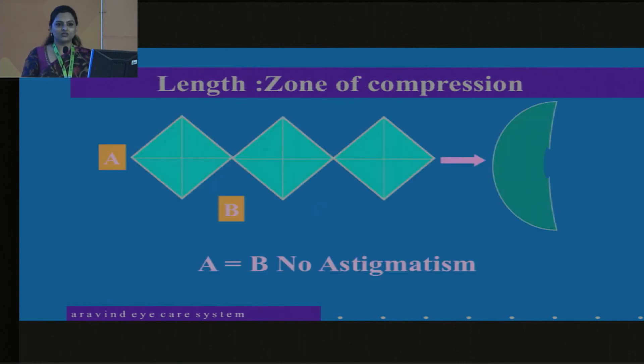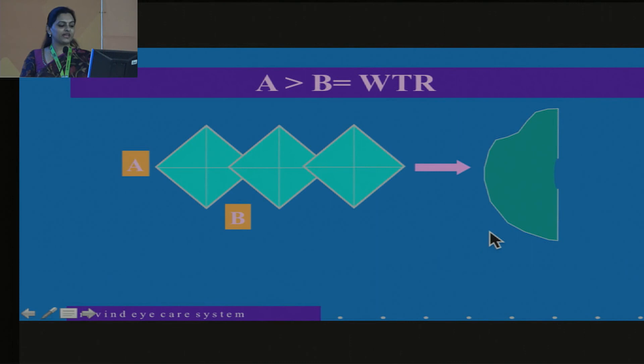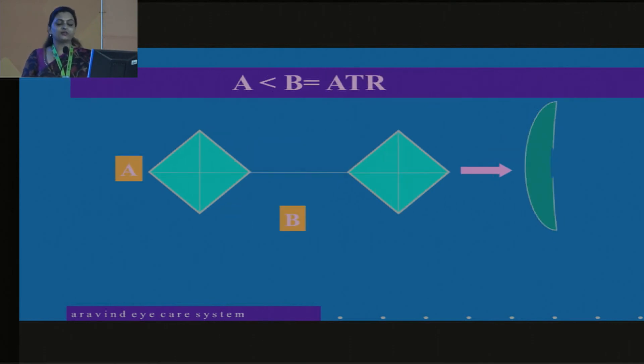In case you are applying more than one suture, then you have to keep this in mind. When the length of the suture is equal to the distance between the two sutures, then you will have a good wound and there will not be any astigmatism. But when your length is not equal to the distance, when you're going to have closely placed sutures, you're definitely going to induce with-the-rule astigmatism. And when your length and your distance between two sutures is great, definitely the wound integrity is not going to be good and again, you're not taking care of the astigmatism part there.